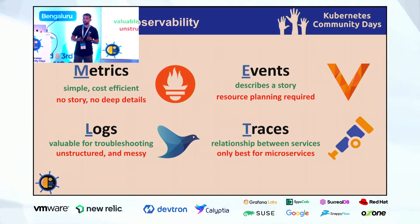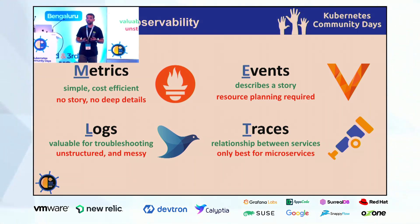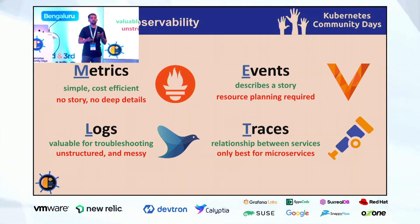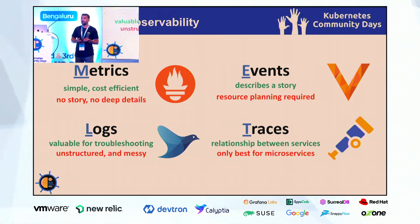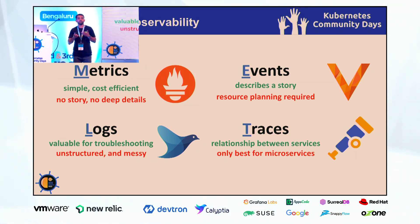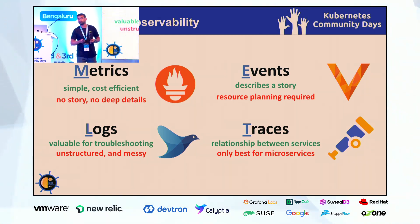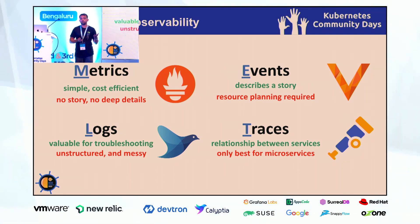Traces — the fourth and most important key thing that's up and coming. It helps us establish the relationship between entities and understand the chain of transactions. We can dig deep into individual events, which are called spans, that are attached to the traces. But the problem is it's only good for distributed services or microservices.